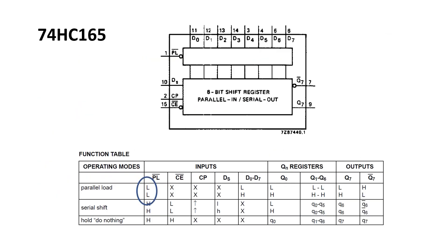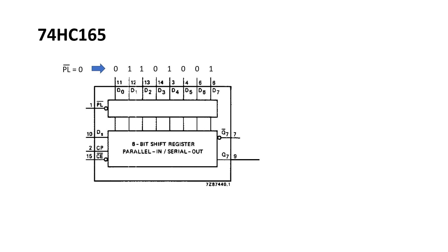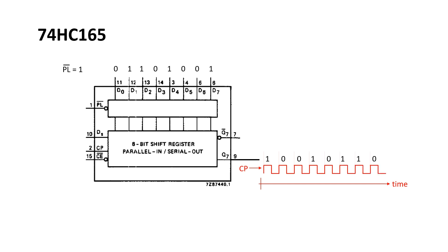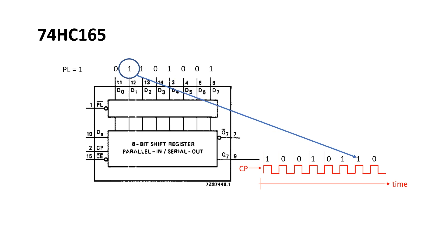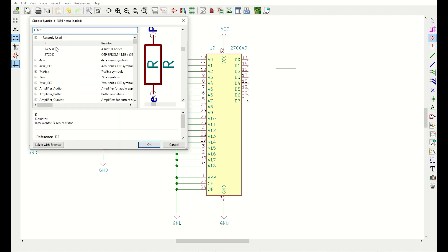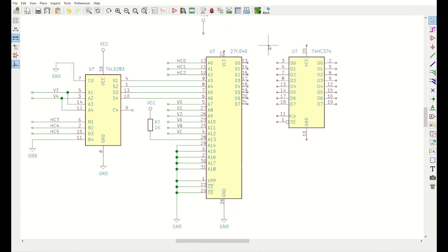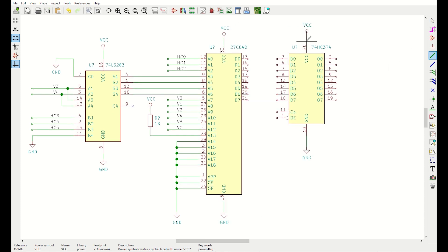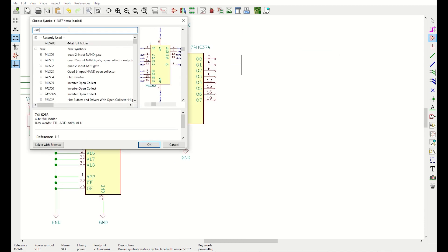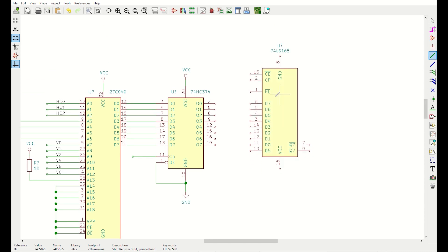When PL is low, the 8 parallel bits presented to the chip are latched internally. Then on the rising edge of clock, the bit pattern is shifted out through Q7 one bit at a time. I'm going to put an octal D-type flip-flop between the output of the EEPROM and the shift register. Strictly speaking I could probably get away without it, but knowing exactly when the data is valid should make it easier to debug. I'll connect the EEPROM to the flip-flops, place the shift register, then invert it so the pins line up and directly connect them.